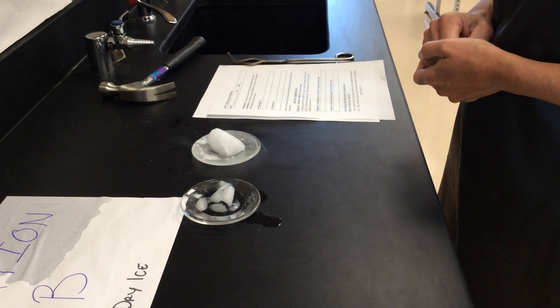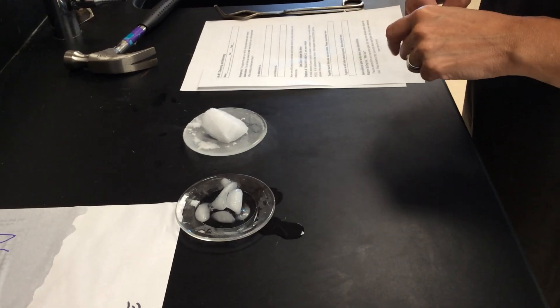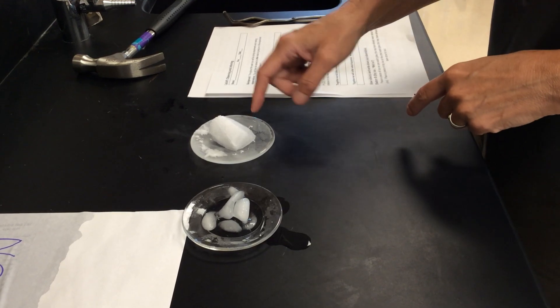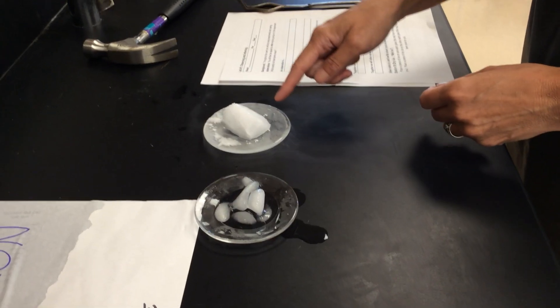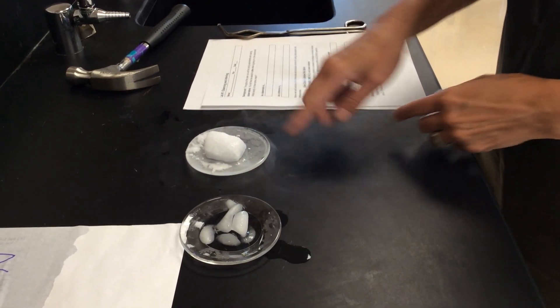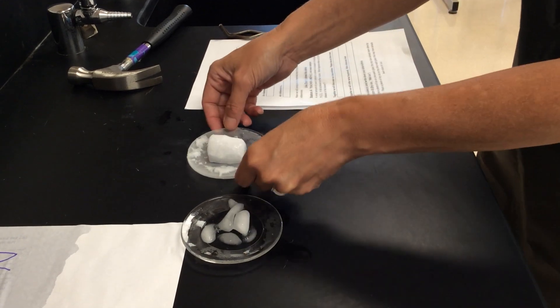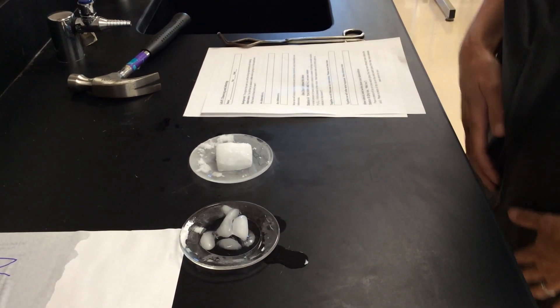In this other petri dish here, or excuse me, this is a watch glass. On this other watch glass, we have dry ice. I don't know if you can see this. Can you see the smoke coming off of the dry ice? So we've got a solid here, and we've got some smoke. But look, when I tip my watch glass, there is no liquid like there was with the regular ice.